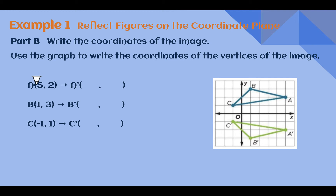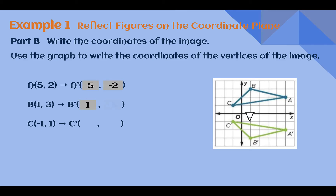So A went from (5, 2) — now it's at (5, -2). B was at (1, 3) — now it's at (1, -3). C was at (-1, 1) — now it's at (-1, -1).